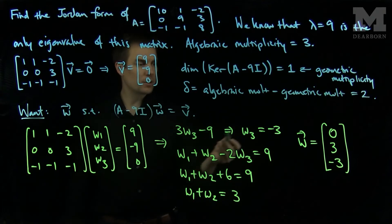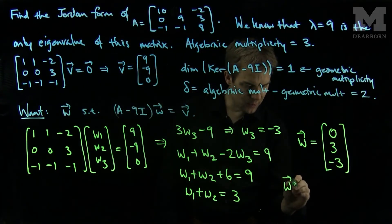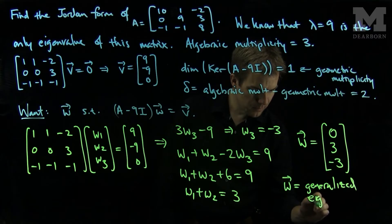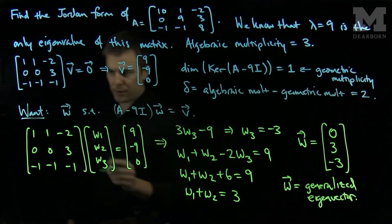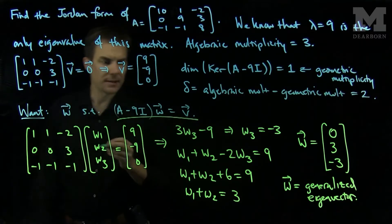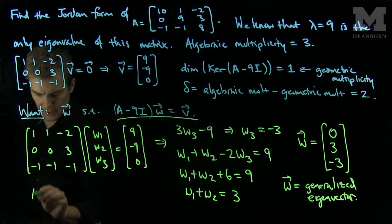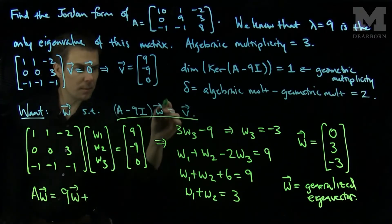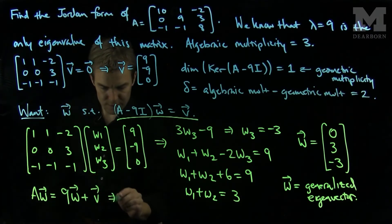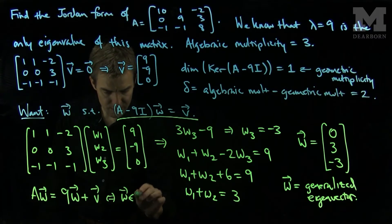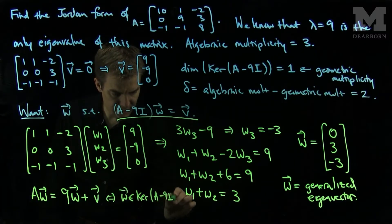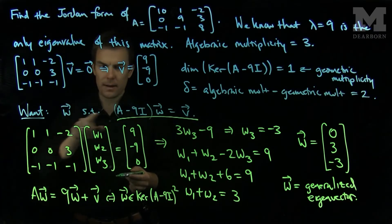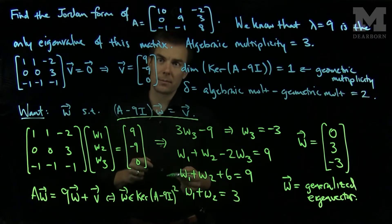So now we have v and w. w is our first generalized eigenvector. The important property of w is that A minus 9 times the identity applied to w equals v, which can be rewritten as A applied to w equals 9w plus v. This is equivalent to saying that w is an element of the kernel of (A minus 9 times the identity) squared. Our next step will be to find a vector q such that A minus 9 times the identity applied to q equals w.